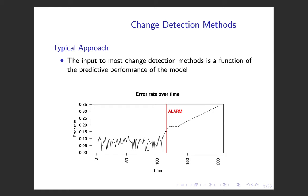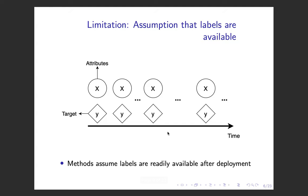Regarding the change detectors, the typical approach is to monitor the performance of the predictive models over time. For example, in this figure, we track the error rate of a model over time. An alarm is issued when this error rate increases significantly. However, one limitation of this approach is that we assume that labels are available at almost all times, which is not feasible in many real-world scenarios.